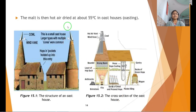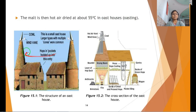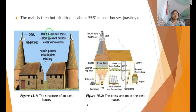The malt is then hot-air dried at 55 degrees centigrade in oast houses — this is called kilning. If you visit Great Britain or European countries you will find these structures called oast houses. The interior has a cowl and wind way. There are small oast houses and larger types with multiple cones.